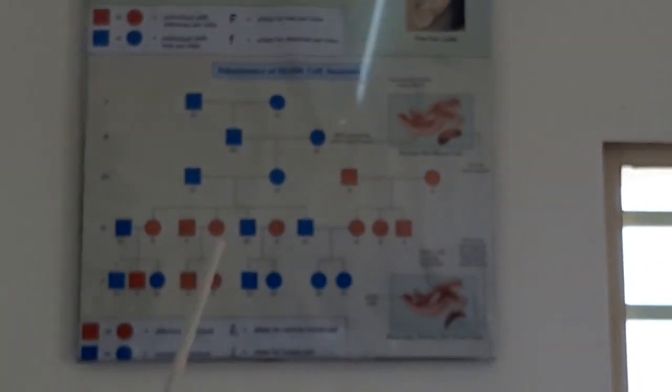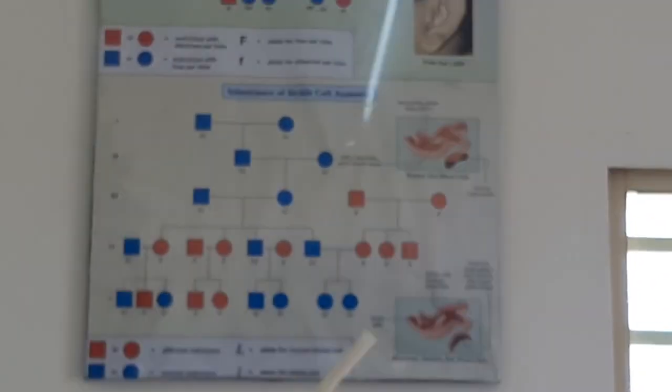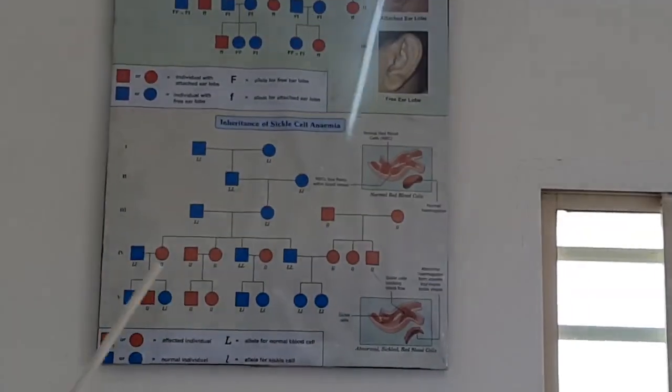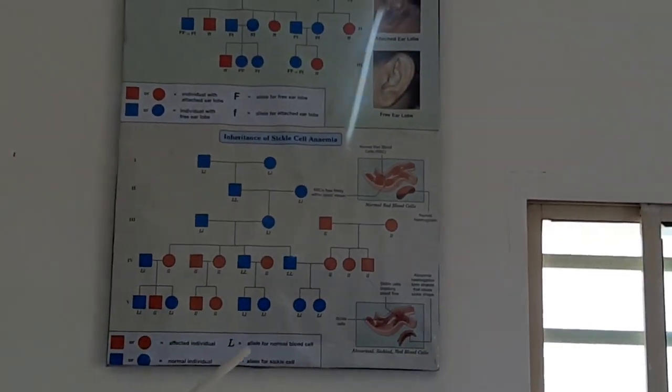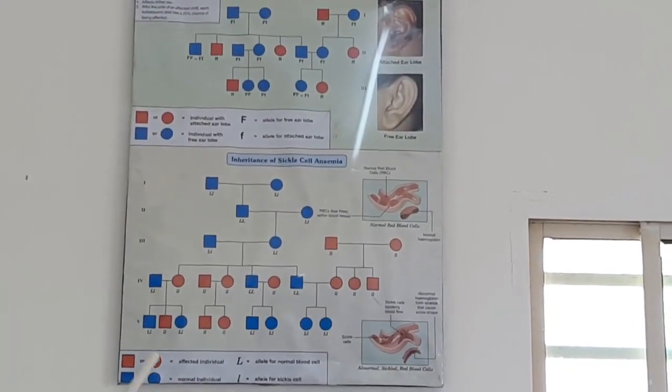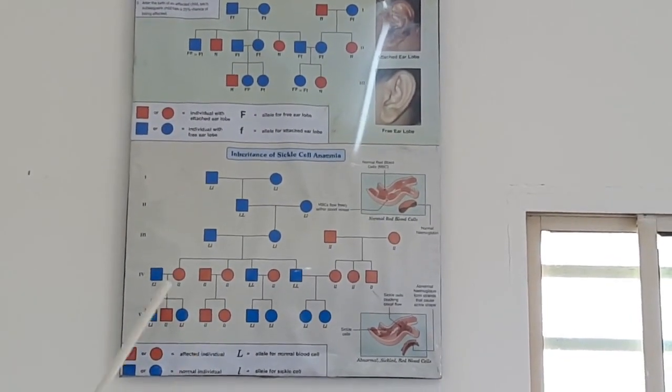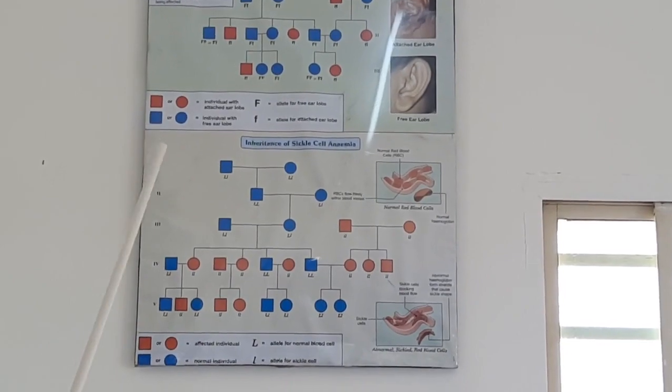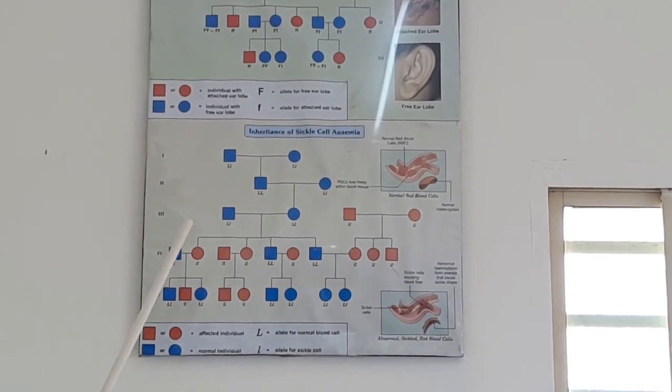This is a very important chart of pedigree analysis, which we study in genetics. For human beings, hereditary studies are done under pedigree analysis.